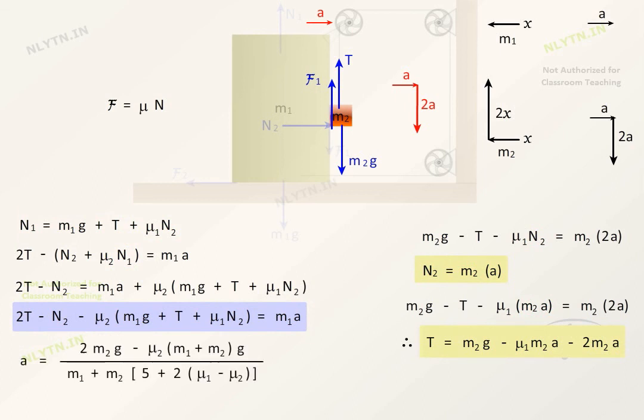we get a is equal to 2m2g minus μ2(m1 plus m2)g divided by (m1 plus m2)(5 plus 2μ1 minus μ2).